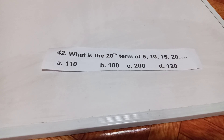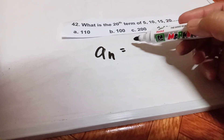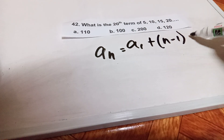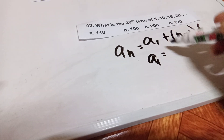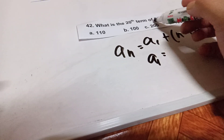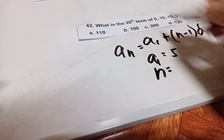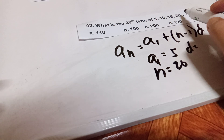Number 42: What is the 20th term of the sequence 5, 10, 15, 20? When we speak about the nth term of an arithmetic sequence, the formula is A_n equals A_1 plus (n minus 1) times the common difference D. Our first term A_1 is 5, n is 20, and the common difference D is 5.